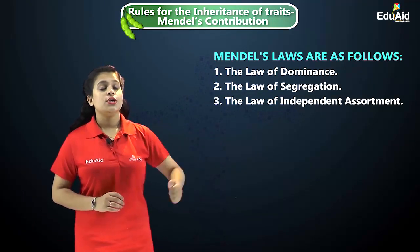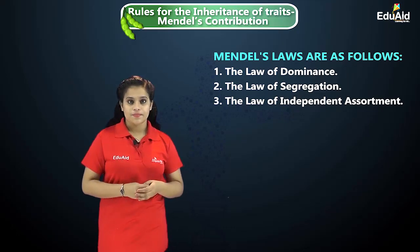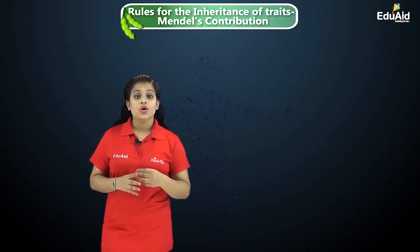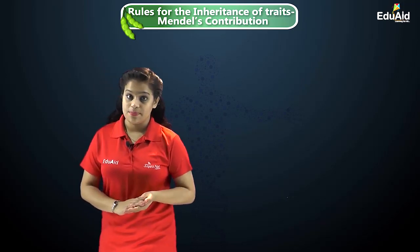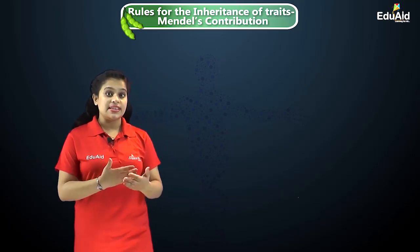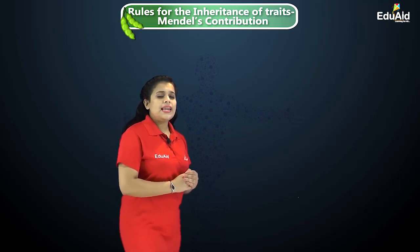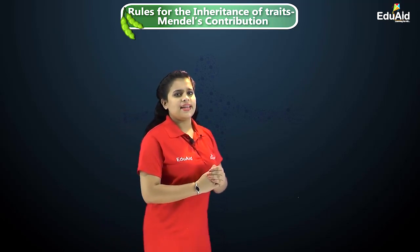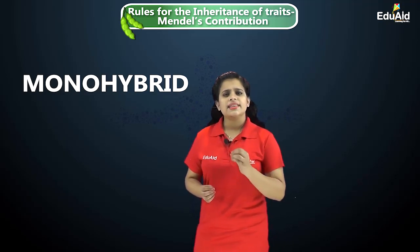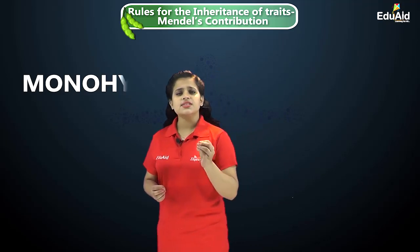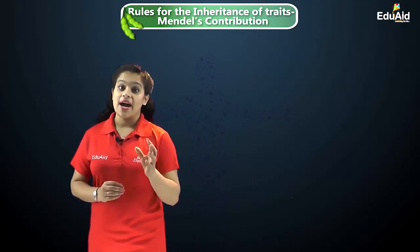You will study these laws in detail in your 12th standard. In your 10th standard, we will just learn how he conducted these experiments and what results he concluded. First, let us understand the monohybrid inheritance, which concerns the inheritance of a single trait — for example, the height trait.